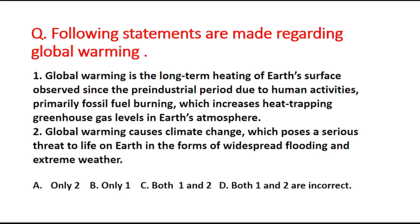Next question involves two statements about global warming. Statement 1: Global warming is the long-term heating of earth's surface observed since the pre-industrial period due to human activities, primarily fossil fuel burning, which increases heat-trapping greenhouse gas levels in the atmosphere. Statement 2: Global warming causes climate change which poses a serious threat to life on earth in the forms of widespread flooding and extreme weather. The correct answer is option C — both statements are true.